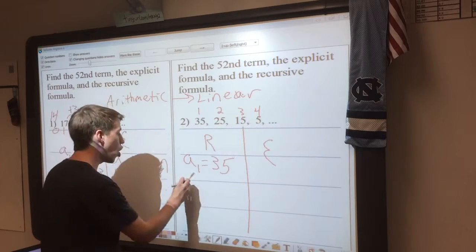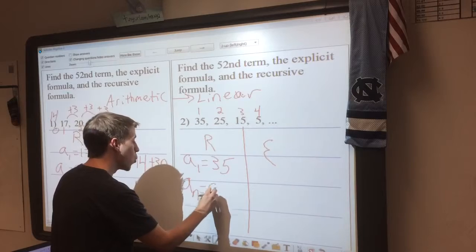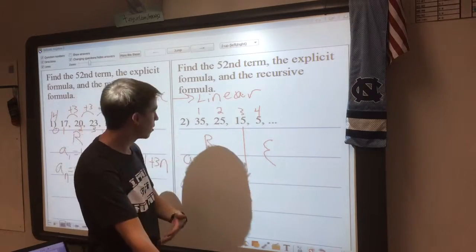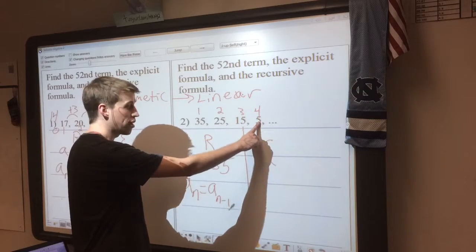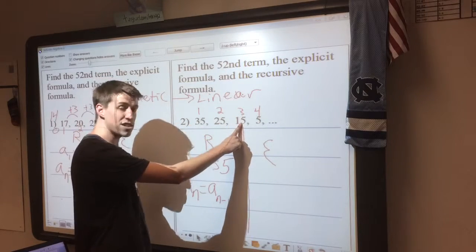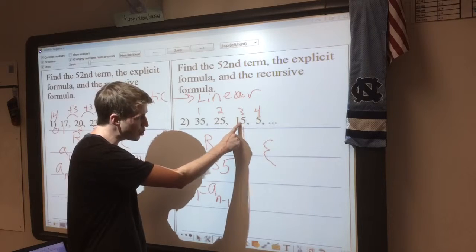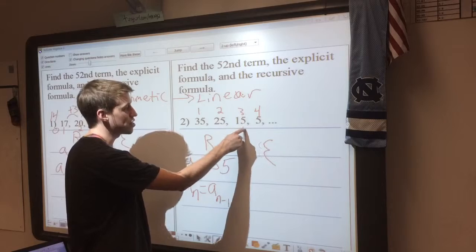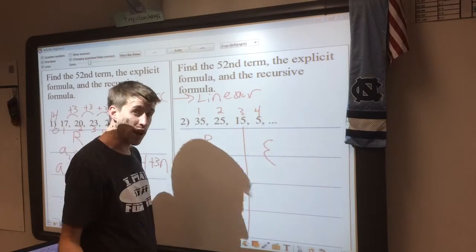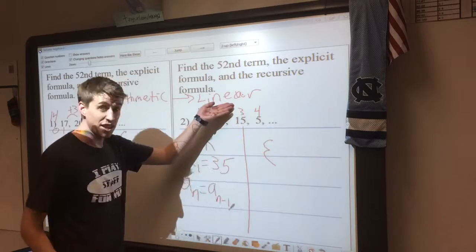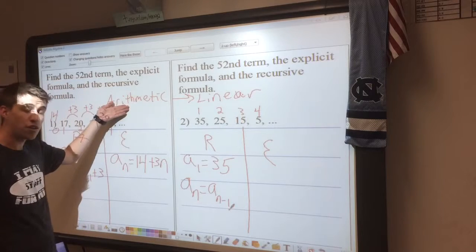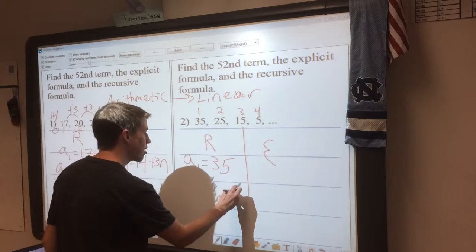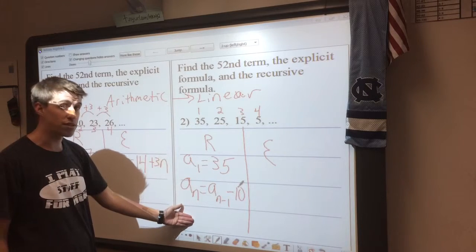My recursive formula always asks me, what did I do to n minus 1, the previous term, to keep on going? So if I go over to 4 and I go to the previous term, ask yourself, what did I do to get to 5? And if I see here, it looks like we're subtracting 10 every time. Since we're subtracting 10 every time, that's a linear pattern or an arithmetic sequence. So I'm just going to be able to write minus 10, and my recursive formula is done.